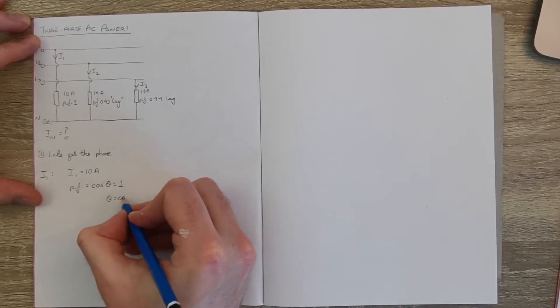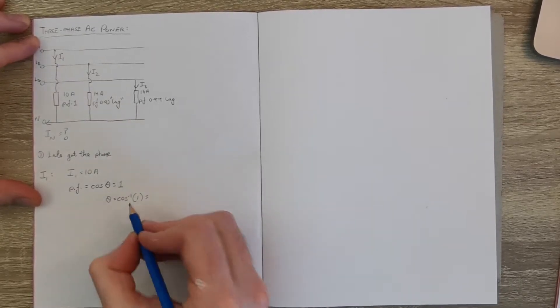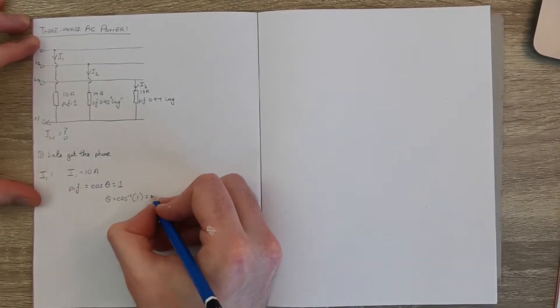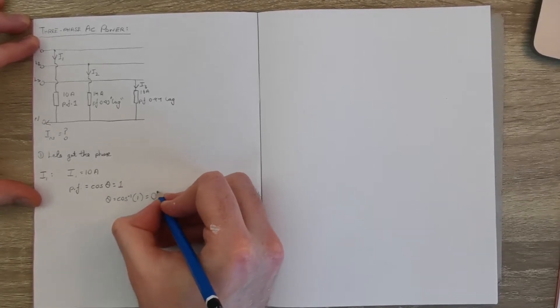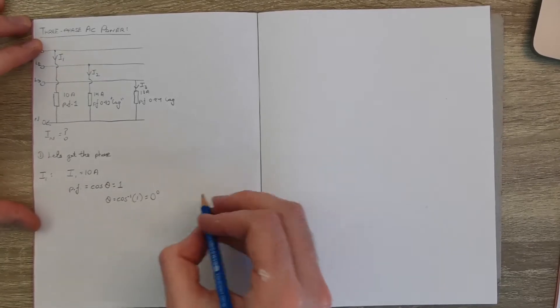So using the cos inverse of 1, we get that the phase of this first current is 0 degrees. You can stick that into a calculator and see that.